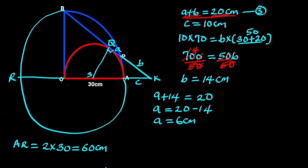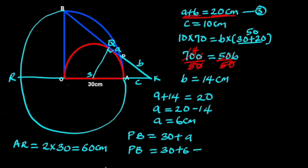From the figure, the length of chord PB is 30 plus a, and we have found a equals 6 centimeters. Substituting a with 6 centimeters, chord PB equals 30 plus 6, which is 36 centimeters.